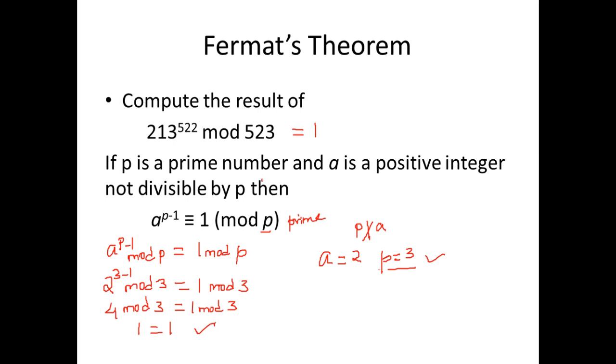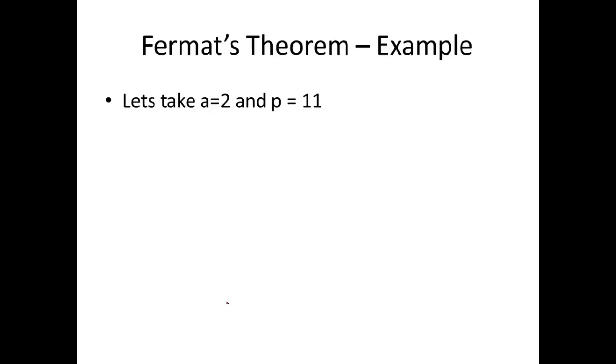So what we understand is when p is a prime number and a is an integer not divisible by p, we can very well say that a power p minus 1 mod p is equal to 1. Let us take another example in Fermat's theorem.